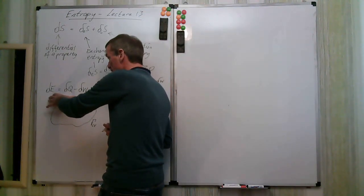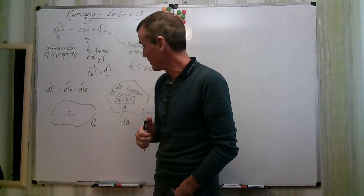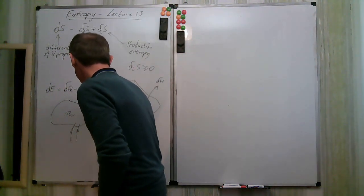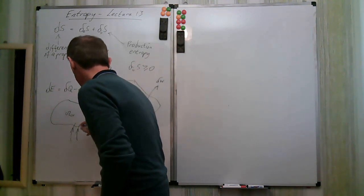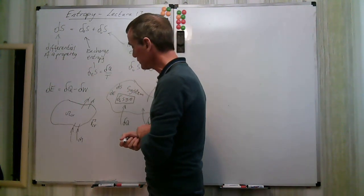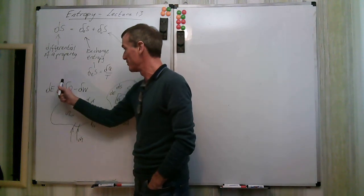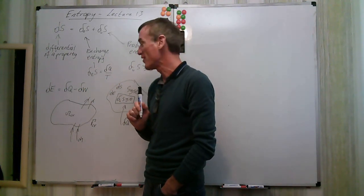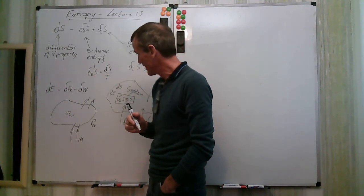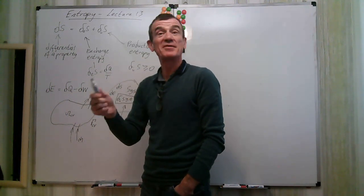We looked at the rate form of this equation, and found an extra term due to the possibility of mass flowing in and out of the system — an m-dot term. This accounts for the possibility of a flow of matter through the system, rather than just a closed system. We were careful about the distinction between a rate and a derivative: we can differentiate properties, but not non-properties — though we can always specify rates.